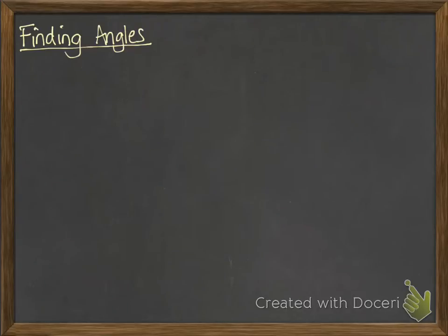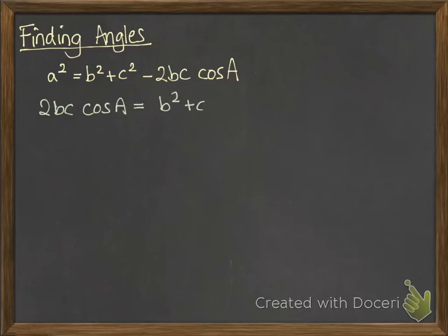Using it to find angles, so if we start off with that rule that we just saw we can rearrange it to find the angle part of it. That cos A is the bit to do with the angle. So if we bring the 2bc cos A over to the left hand side and take that a² over to the right hand side this is what it looks like.